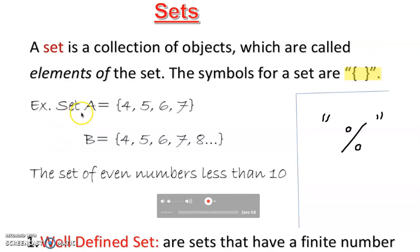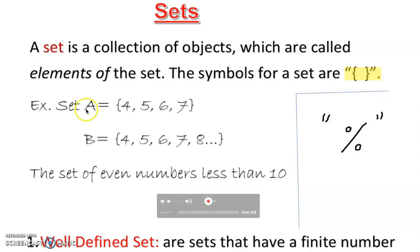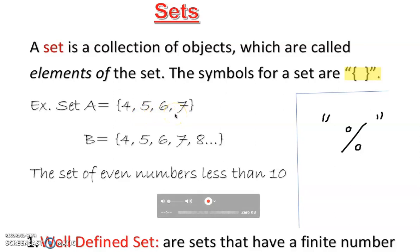Let's look at three examples. Notice the capital letter — every set you create must be named with a capital letter, any letter A to Z. It's like a variable, but the condition is you must use a capital letter. So, Set A = {4, 5, 6, 7}. That's how we read it: open braces, the elements, closed braces. How many elements? 1, 2, 3, 4 — so 4 members. This is a limited set, so we call it finite.